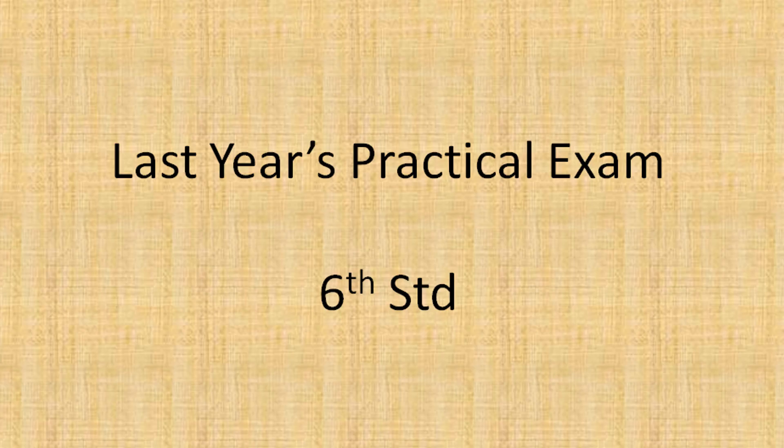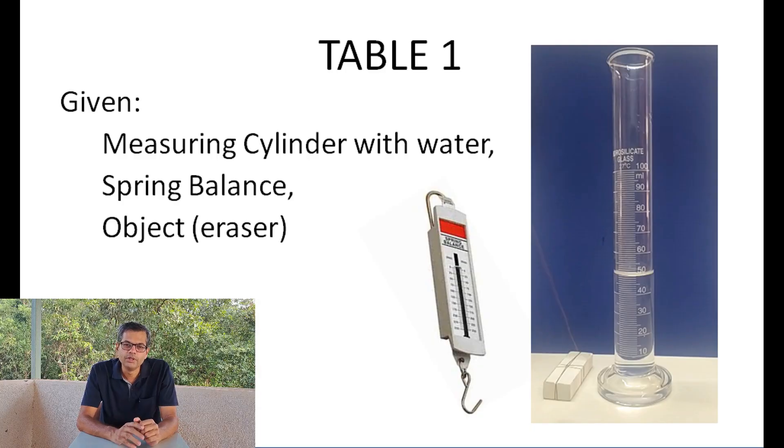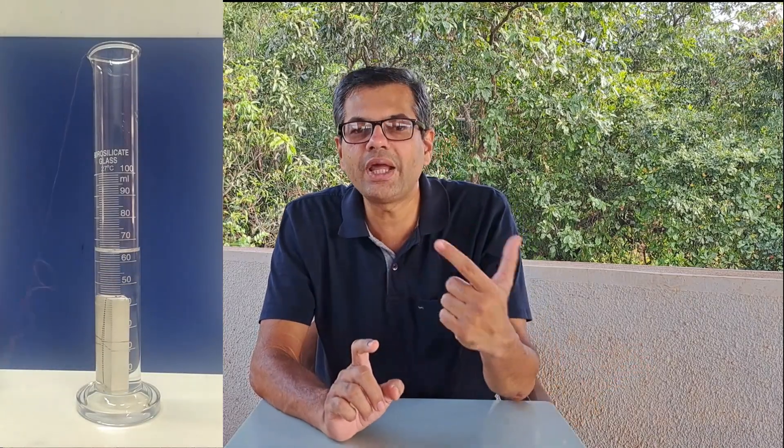Now let us see what was at the 6th standard practical. On the first table, a spring balance was given, an object with a string attached, and a measuring cylinder with some water already in it. The questions were: find the mass of the object, find the volume of the object, and calculate the density. You use the spring balance to measure mass in grams. To find volume, note the initial water level, dip the object in, note the final level, and subtract. For density, write the formula: density equals mass divided by volume, calculate, and add units gram per cc. This table was 6 marks in 6 minutes.